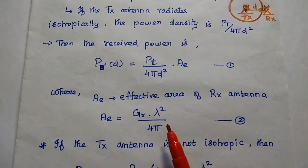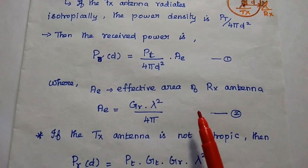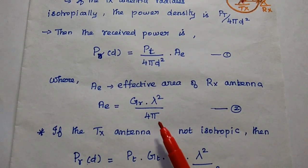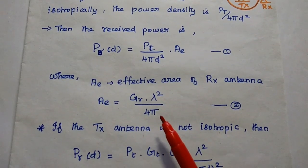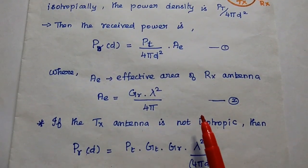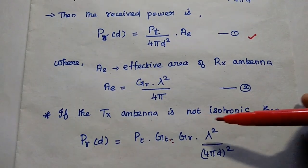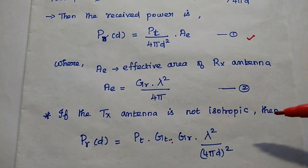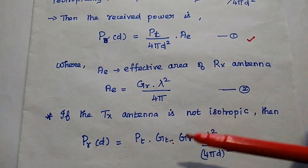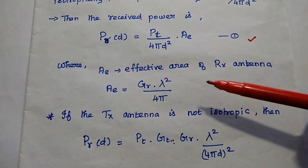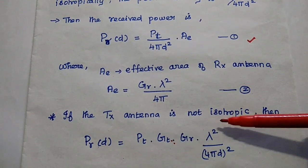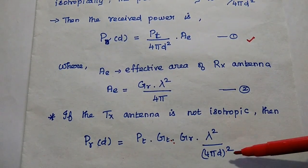Here, AE is the effective area of the receiving antenna. It depends on the gain of the receiving antenna and its wavelength. So, AE = GR × λ² / 4π. Consider this as the second equation. If the transmitting antenna is not isotropic, then the power density is multiplied with the transmitting antenna gain, and we replace the effective area with its value. This term then becomes (λ / 4πD)².